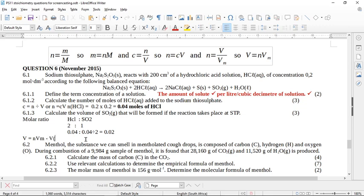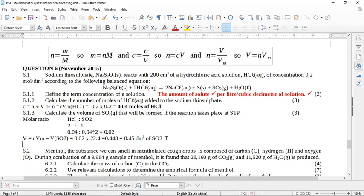Where are we going to find that Vm? We're going to find it on our formula sheet. If you've done this before, you'll know it's 22.4. If we put this in our calculator, we get 0.448 or 0.45 cubic decimeters of SO₂. There's the first part of the question done. It's not hard, we should be fine.